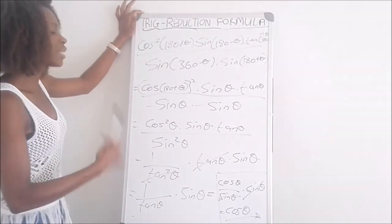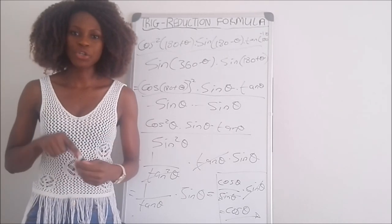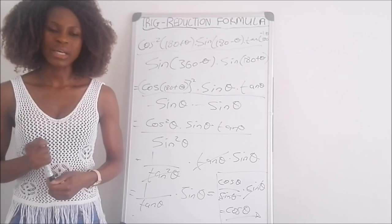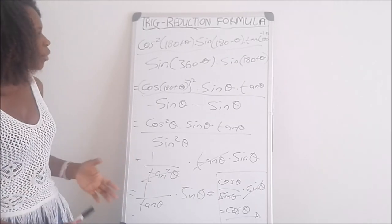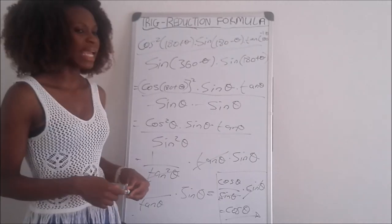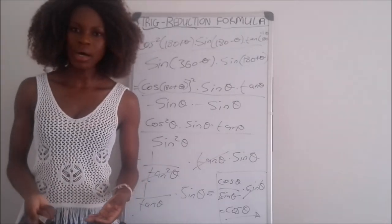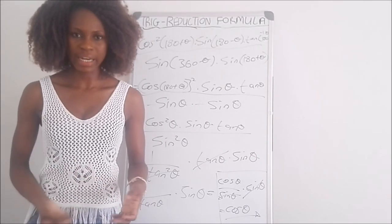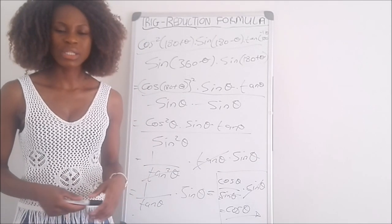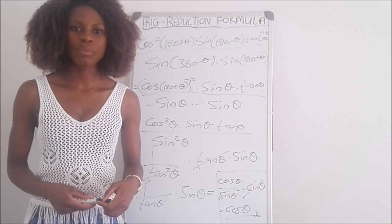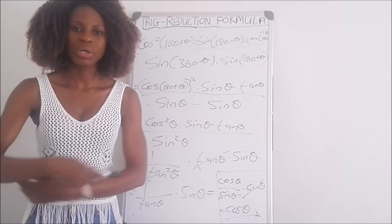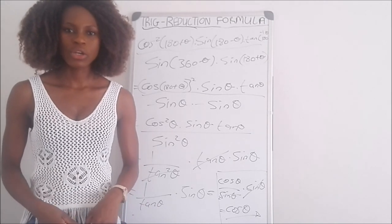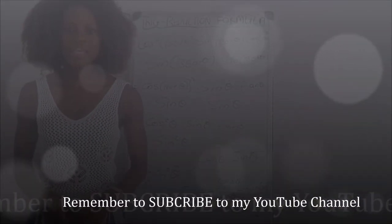Remember, when dealing with these kinds of questions, always refer to your Cartesian plane and it will make answering much easier. For 180 plus theta, only tan is positive — any other trig ratio will be negative. I hope you understood this lesson. If not, please let us know in the comments. Don't forget to subscribe to MaxXYSight so you get daily notifications when we upload videos. Thank you.